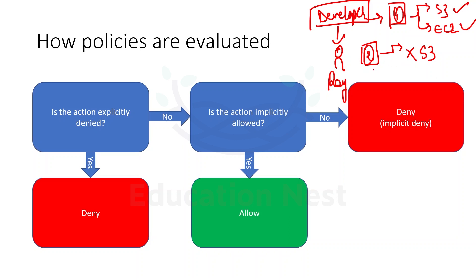My first policy states that S3 and EC2 are allowed, but my individual policy says S3 is denied. Is there any explicit deny? Yes — there is an explicit deny for S3. So S3 would be denied for Roy. Roy would not get access to S3 because it is explicitly denied at the individual level, even though at the group level he is allowed.